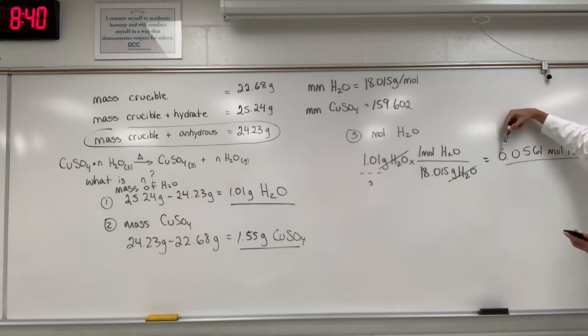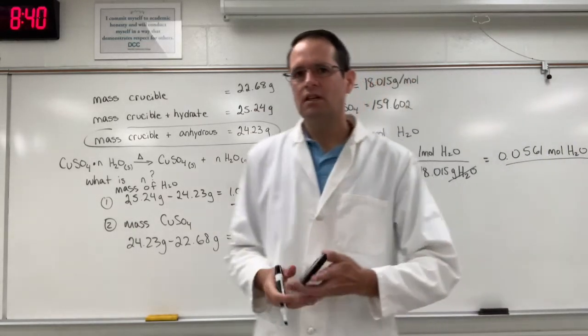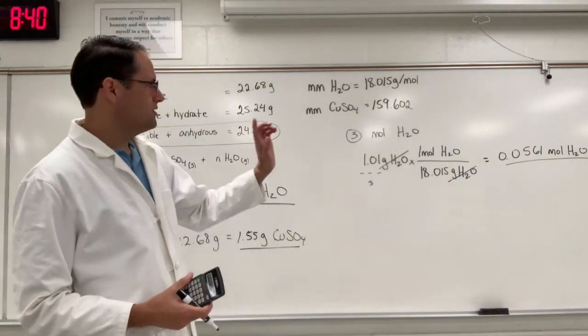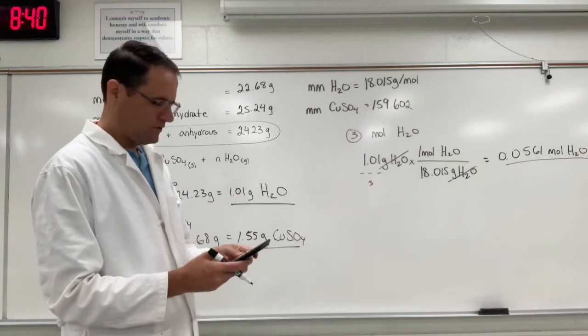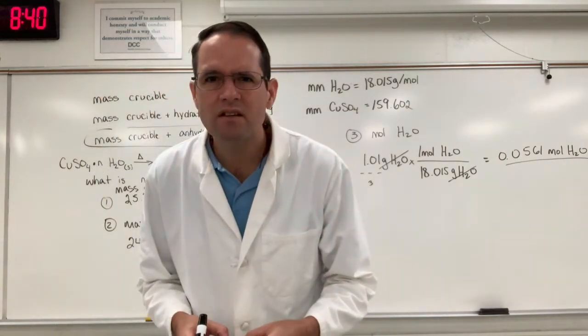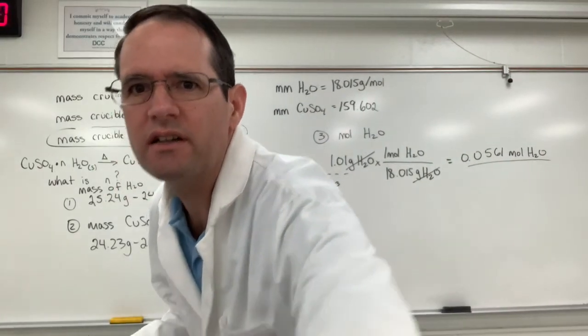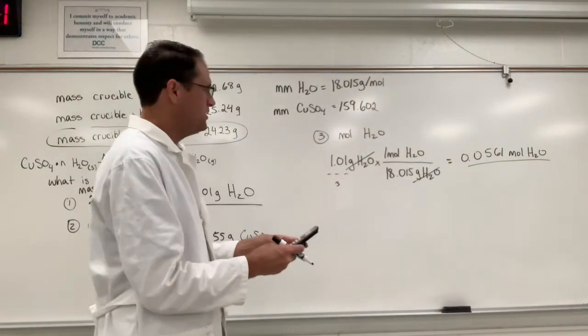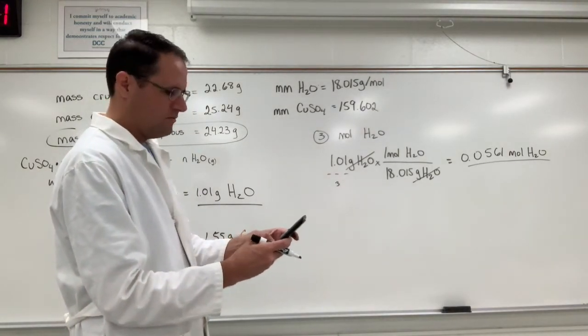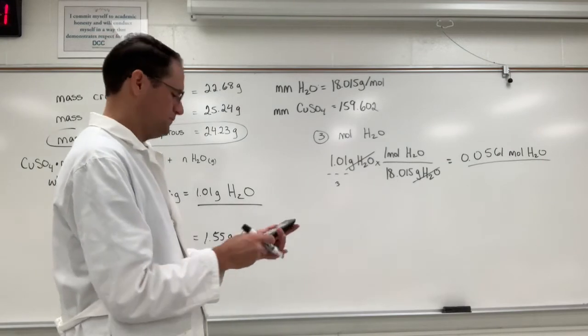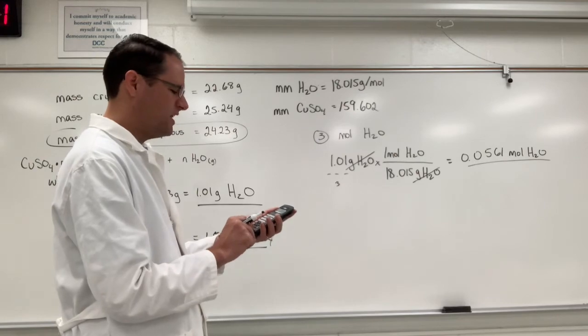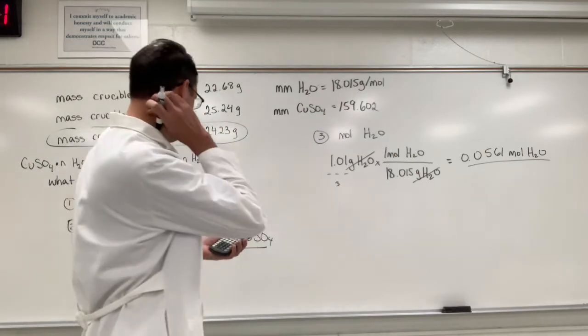Remember these zeros on the left are called leading zeros. And they do not count towards the significant figures in the number. So five, six, and one are the significant figures for this example. You see that on the screen. Let me move this a little bit. All right. Let me double check again, just to make sure I don't mess up the whole YouTube community here. 1.01 divided by 18.015. I'm getting the same answer twice.